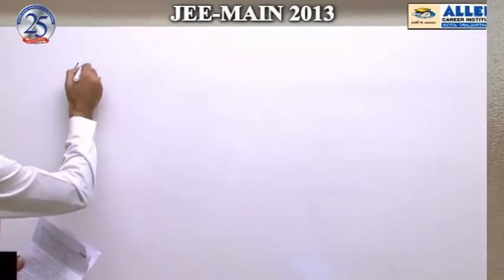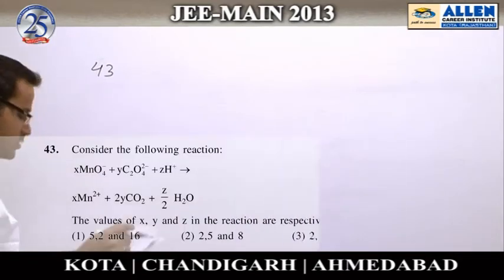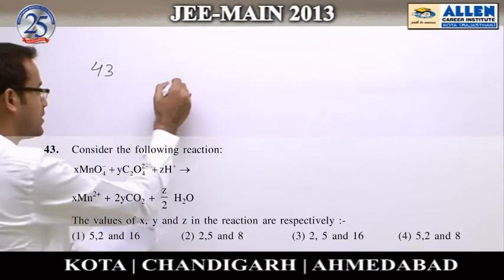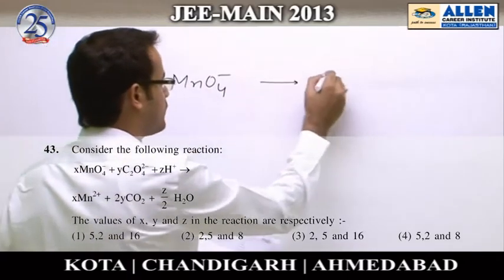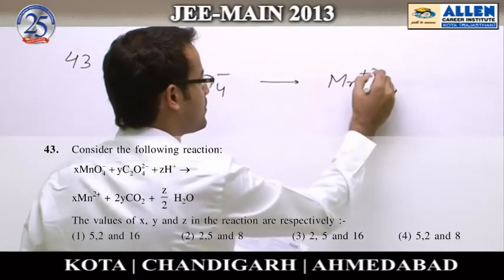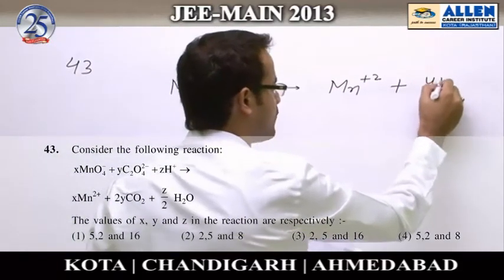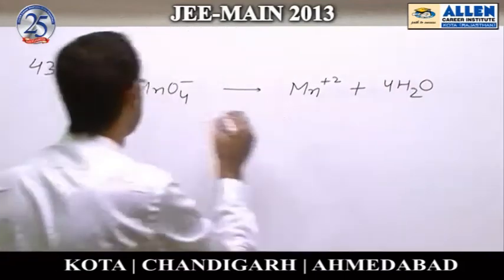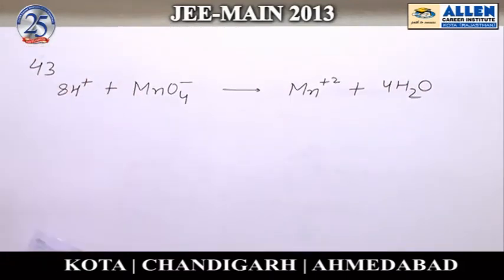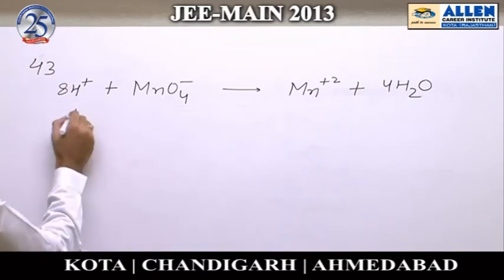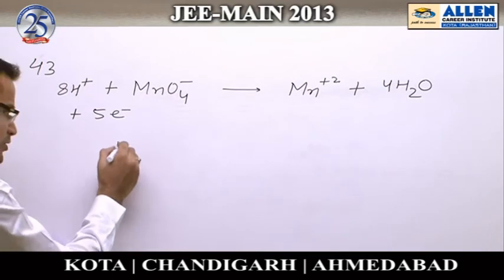Question number 43: The given redox reaction can be balanced by the ion-electron method. First, write down the reduction half-reaction: MnO4⁻ converting into Mn²⁺. Since Mn is balanced, to balance oxygen add water molecules, and for hydrogen add H⁺ ions, then balance the charge by adding the required number of electrons.